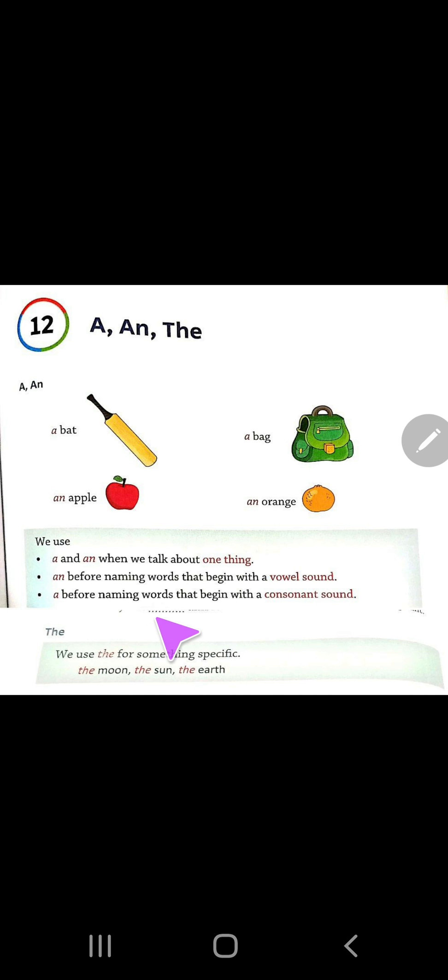Let's see. A before naming words that begin with a consonant sound. Aur A ka hain pere hum use karenghe. Jinka sound kawun se hona chahi hai? Consonants hona chahi hai. Consonants kawun se hota hai aapke. Jishe B, C, D, F, G, H, J, K, L, M. So these are the consonants.